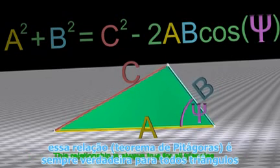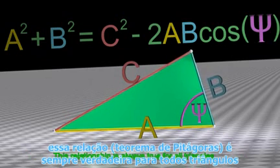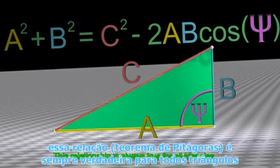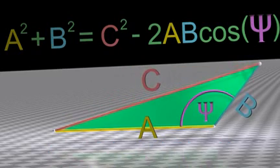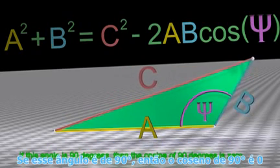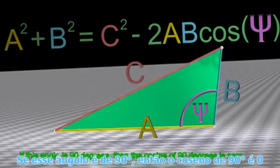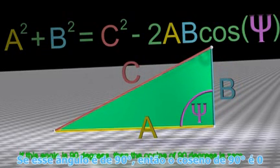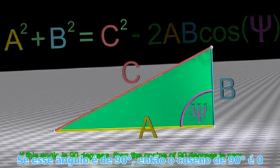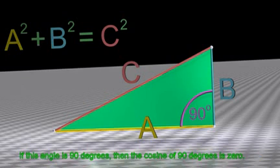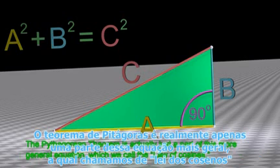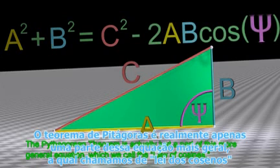This relationship is always true for all triangles. If this angle is 90 degrees, then the cosine of 90 degrees is zero. The Pythagorean theorem is actually just a part of this more general equation, which we call the law of cosines.